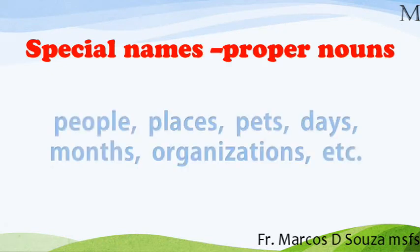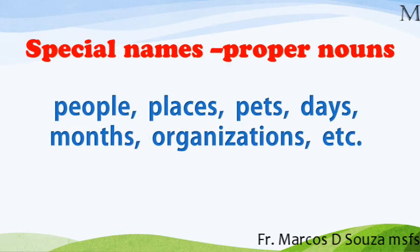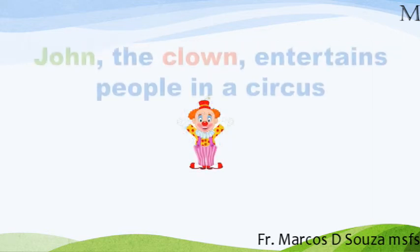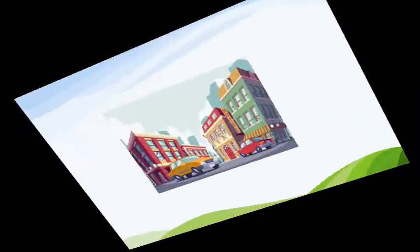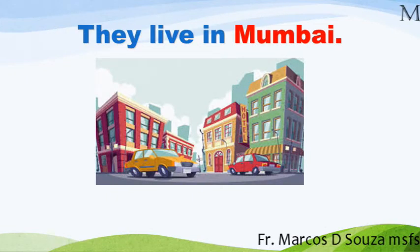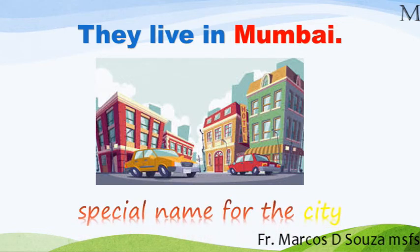Special names given to people, places, pets, days, months, organizations, etc. are proper nouns. For example: John the clown entertains people in a circus. In this sentence, we are talking about John the clown. John is a special name for the clown. They live in Mumbai. In this sentence, we are talking about Mumbai, a city. Mumbai is a special name for the city.